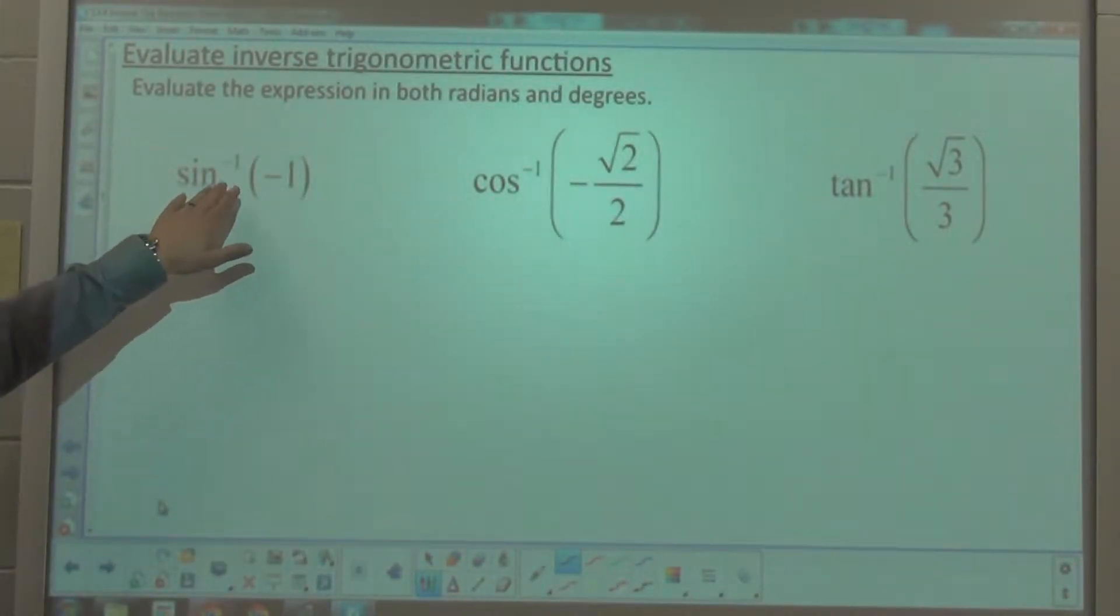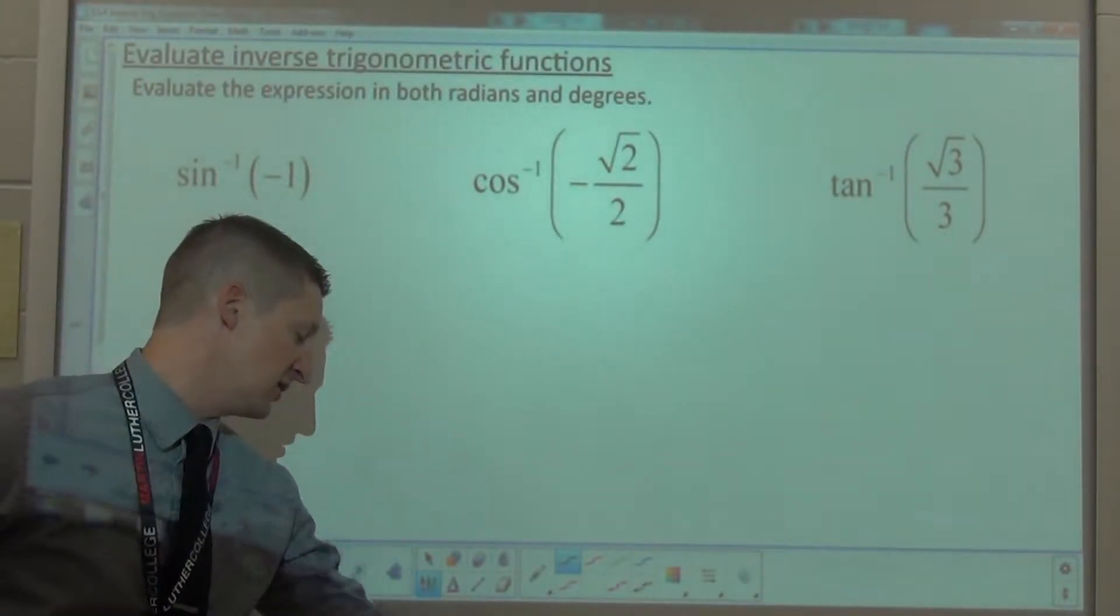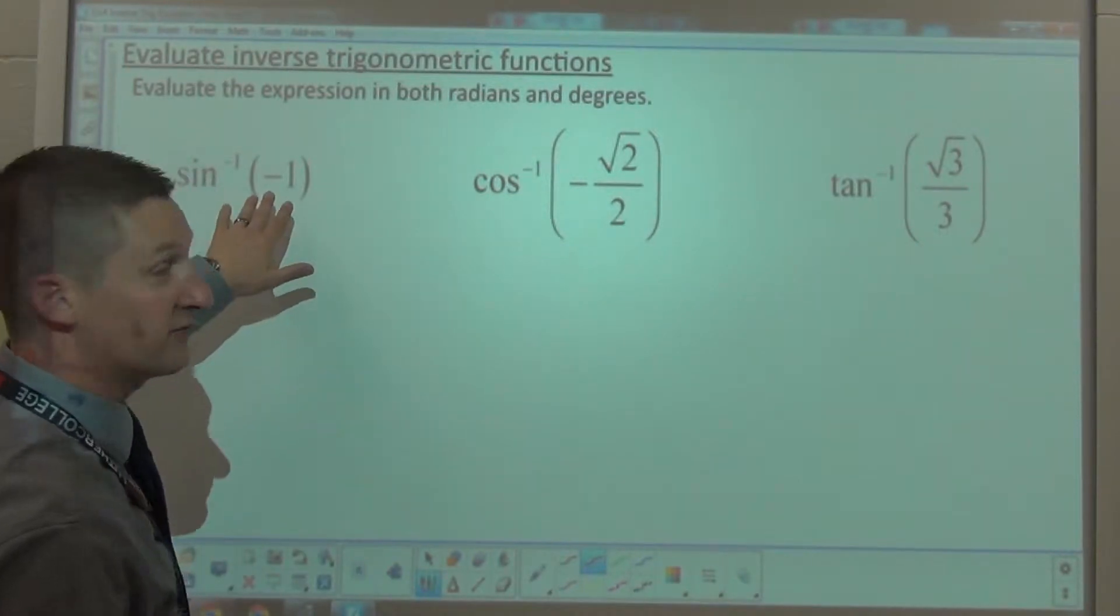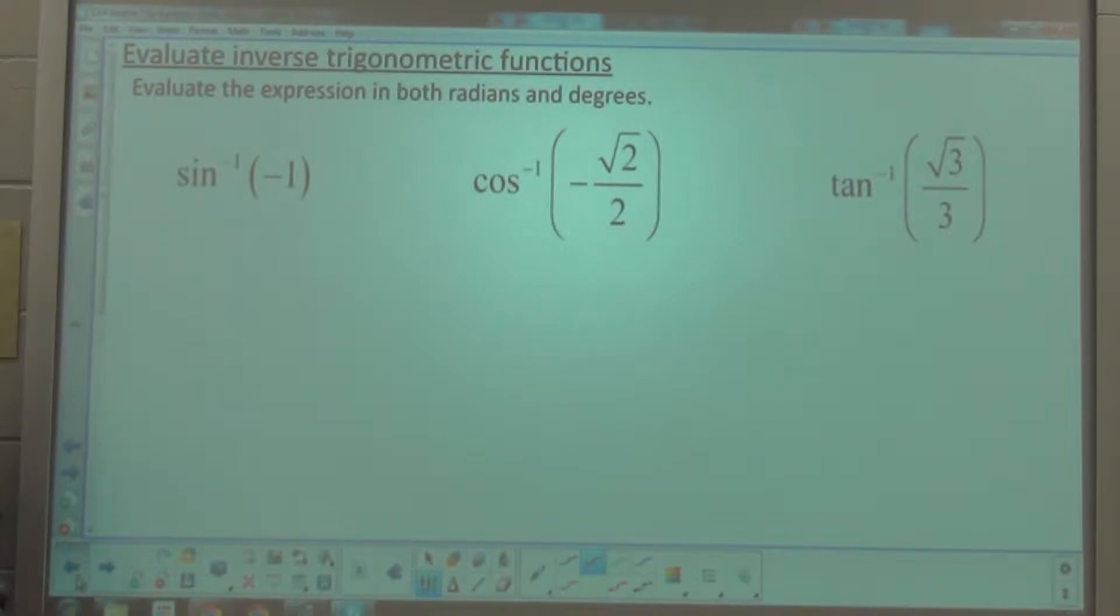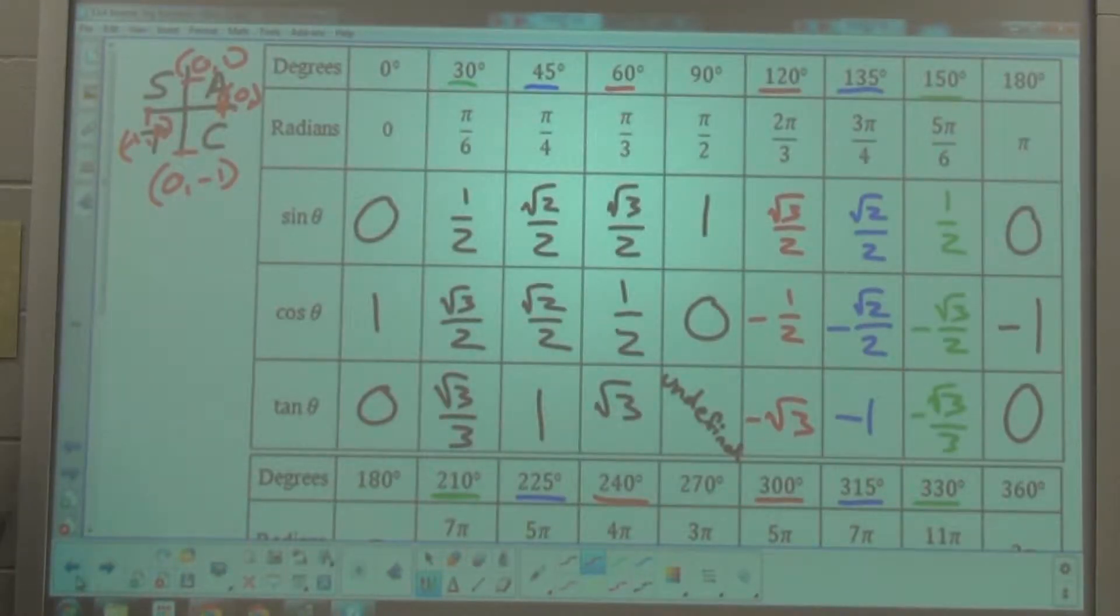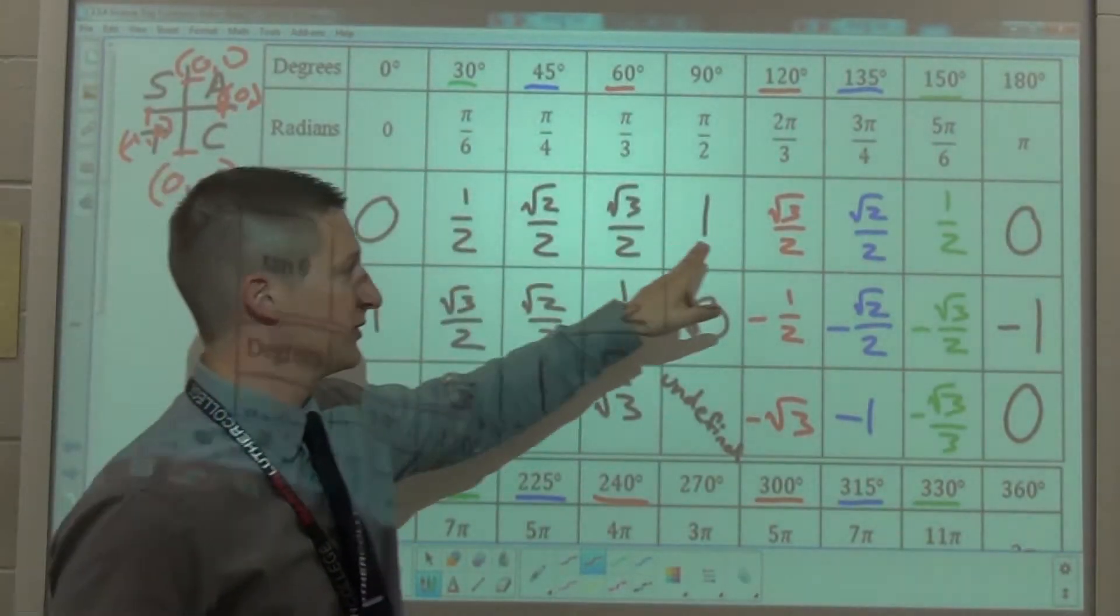If I'm asked to find the inverse sine of negative 1, or the arc sine of negative 1, what that means is, what is the angle that has a value for sine of negative 1? Now, using my table, what I do is, I'm going to go back to my table, and I'm going to look for when is the sine of theta equal to negative 1?